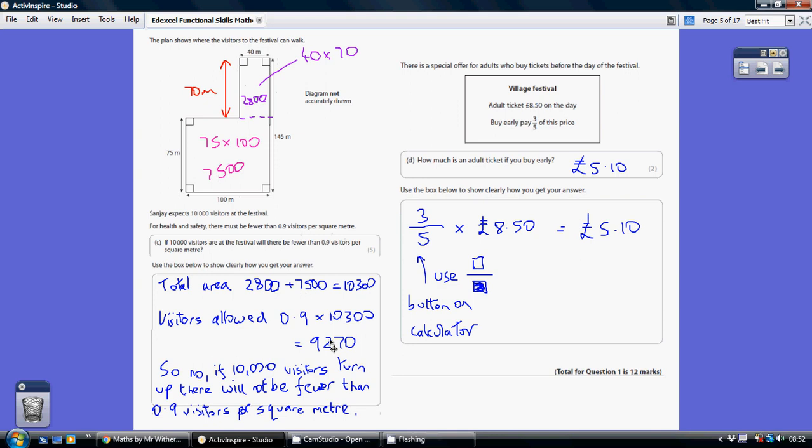Now Sanjay expects 10,000 visitors at the festival. Well that's just too many. He's only allowed to have 9,270. So no, if 10,000 visitors turn up, there would not be fewer than 0.9 visitors per square meter.